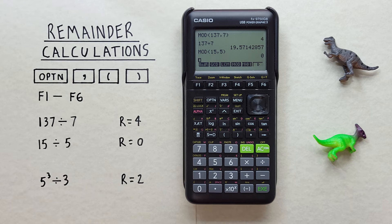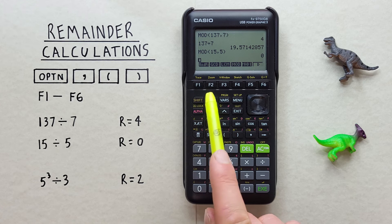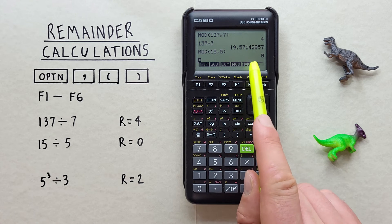We can also find the remainder of exponential division, like 5 to the power of 3 divided by 3. To do this, from the same menu, we choose F5 mod e.